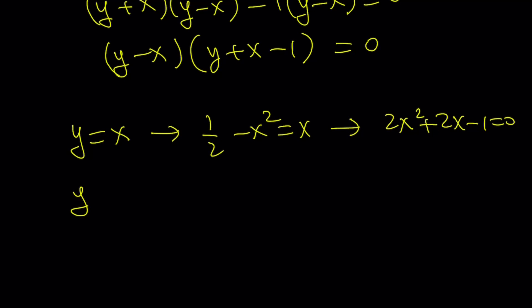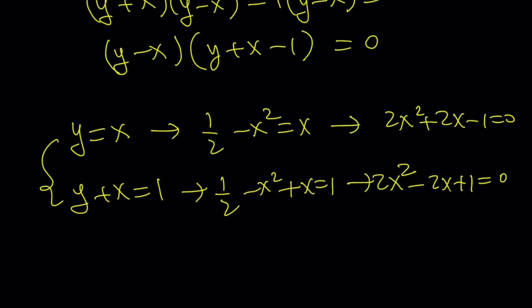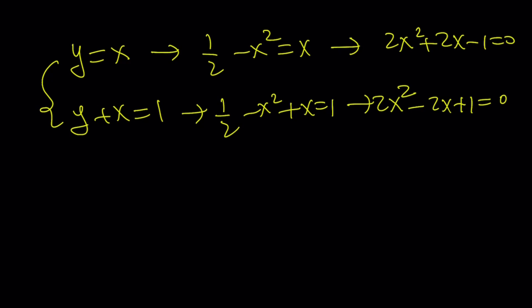The other equation gives us y + x = 1. And y is 1/2 - x² + x = 1. And this is going to give us the other equation, which is 2x² - 2x + 1 = 0. And that is where the complex solutions arise. And from here, the solution set basically becomes the same, which is (1 ± i)/2 and (-1 ± √3)/2.